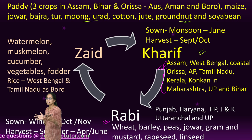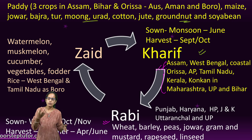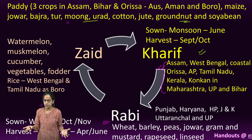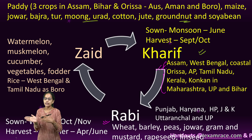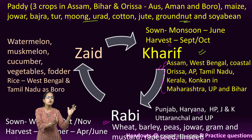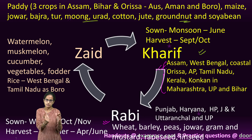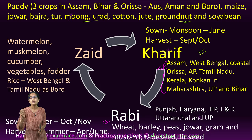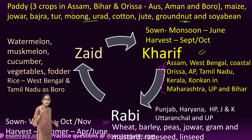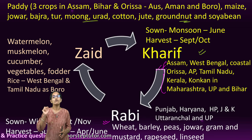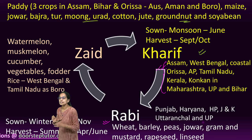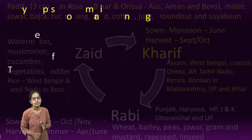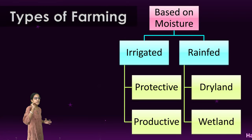The Zayad season is a small season between the end of Rabi and before the beginning of Kharif — about 2 to 3 months — where watermelons, cucumbers, muskmelons, fruits, vegetables, and fodder crops are grown.